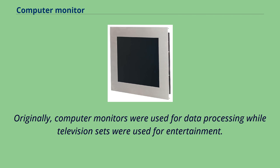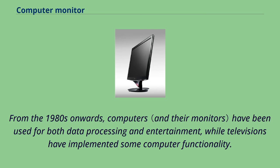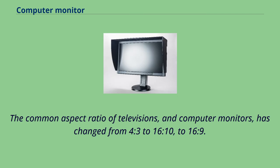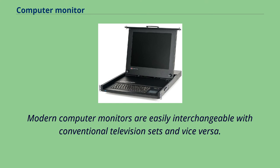Originally, computer monitors were used for data processing while television sets were used for entertainment. From the 1980s onwards, computers have been used for both data processing and entertainment, while televisions have implemented some computer functionality. The common aspect ratio of televisions and computer monitors has changed from 4:3 to 16:10 to 16:9. Modern computer monitors are easily interchangeable with conventional television sets and vice versa.